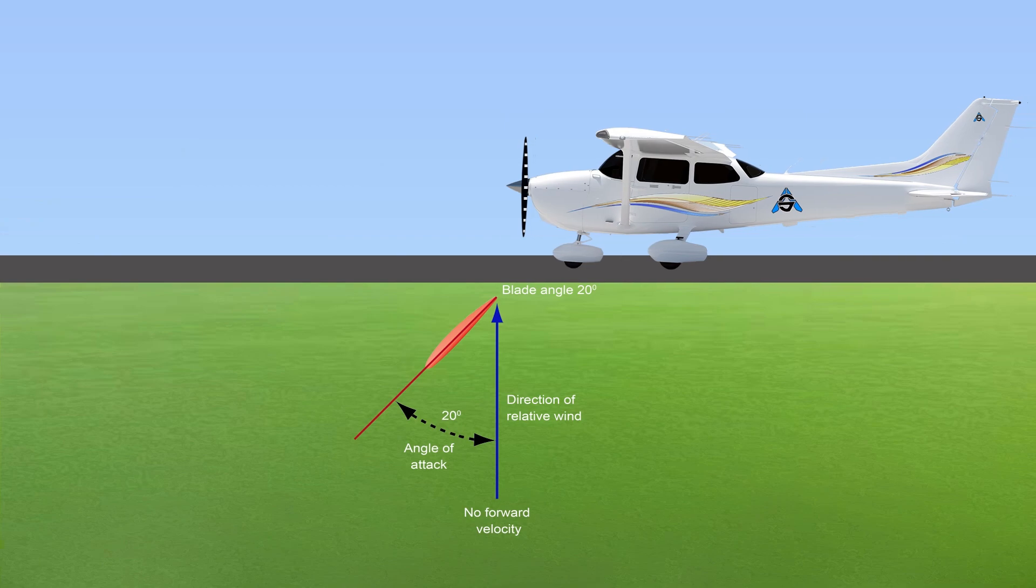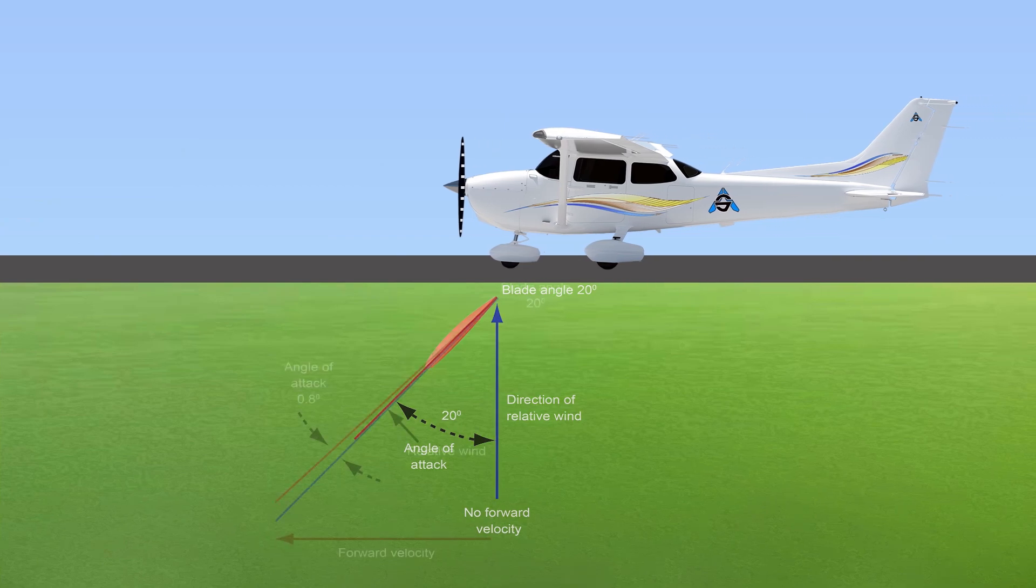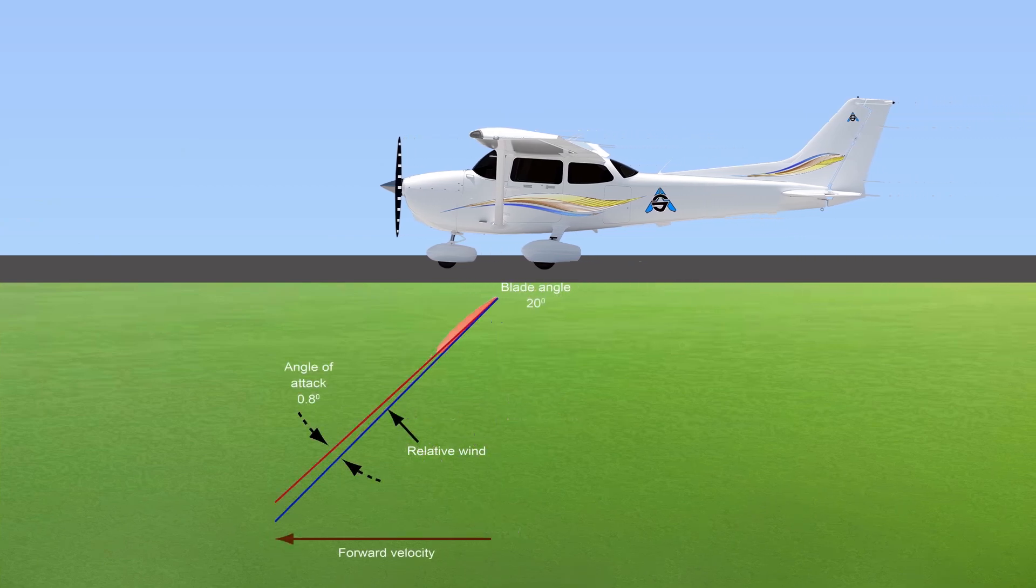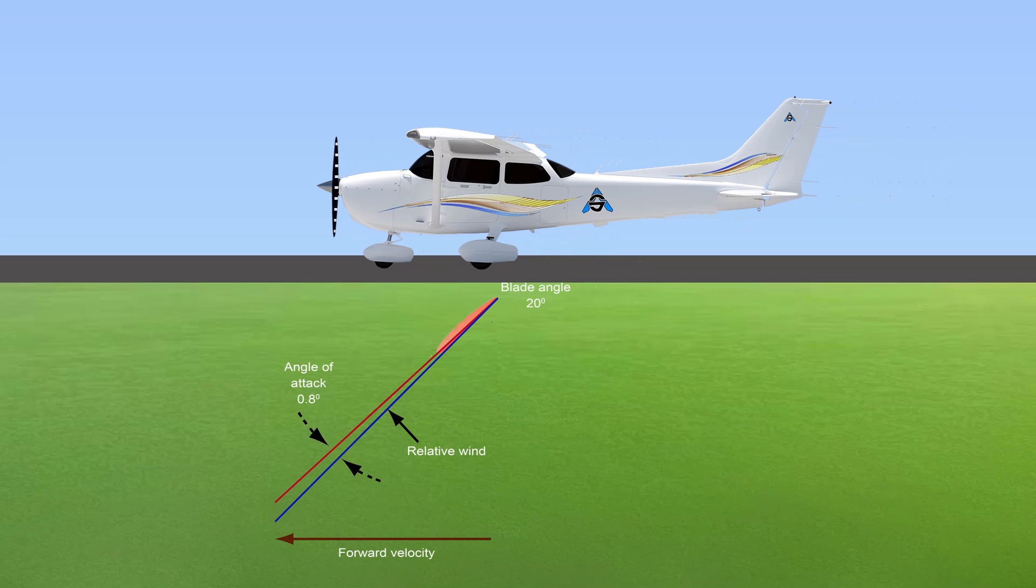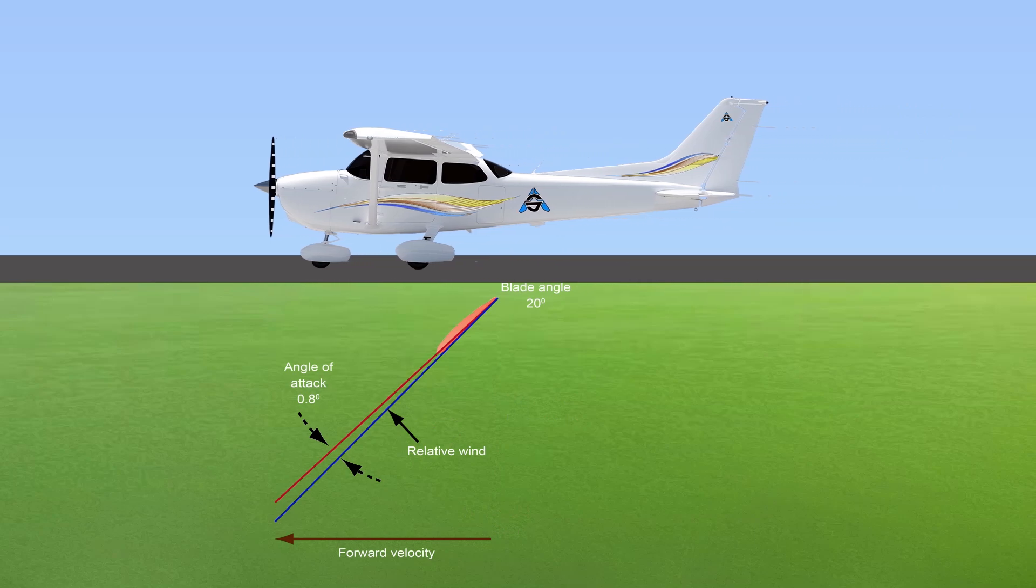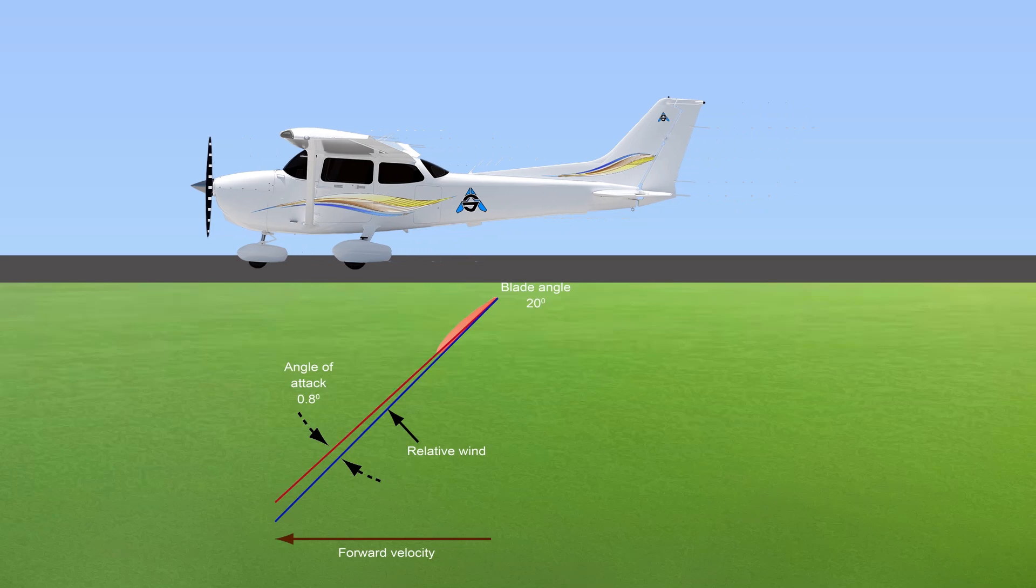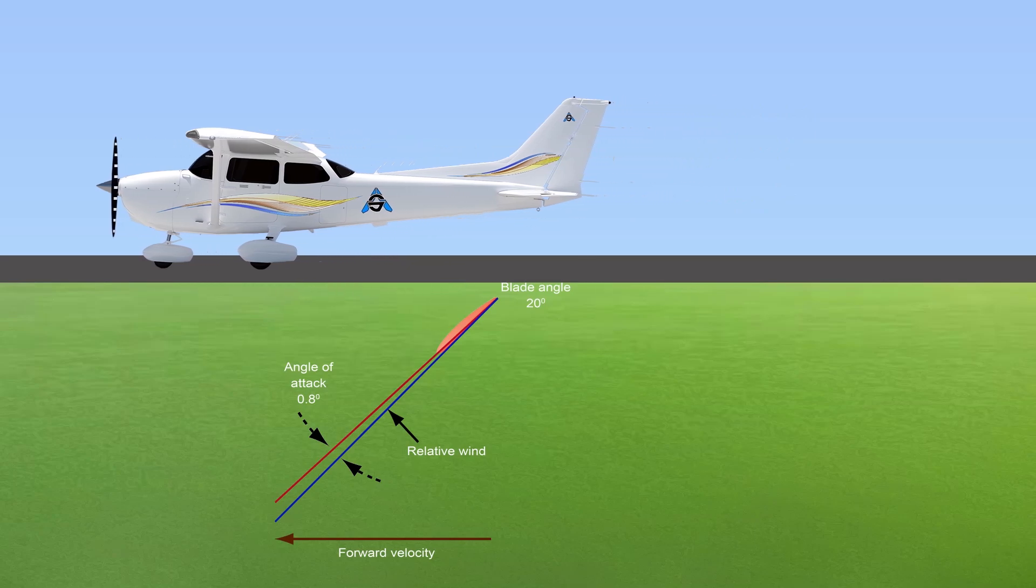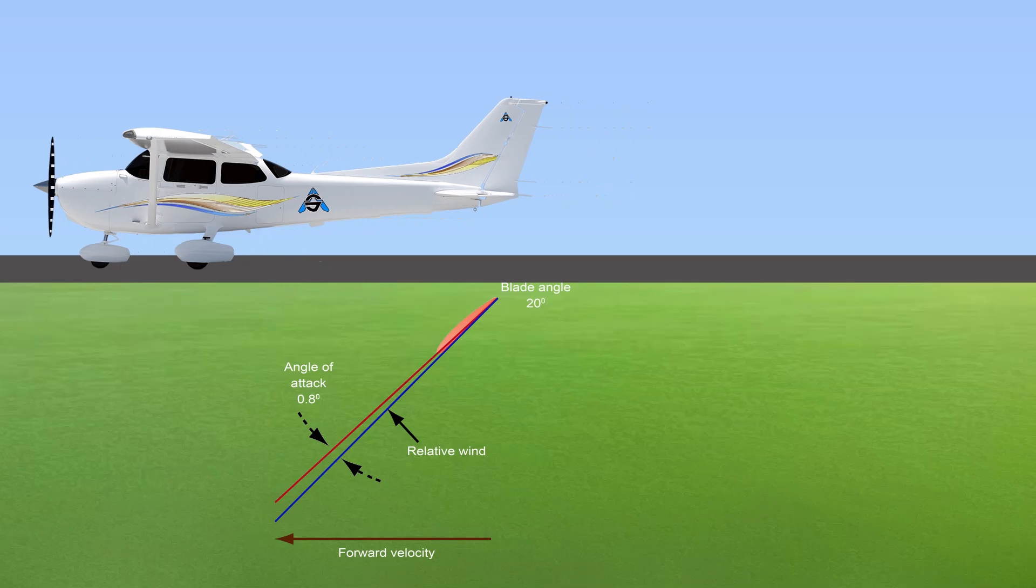When the aircraft begins moving forward, the relative wind direction shifts because, in addition to rotating, the propeller now has forward motion. The result is that the relative wind is much closer to the angle of attack. In this case, the angle of attack will always be less than the blade angle.